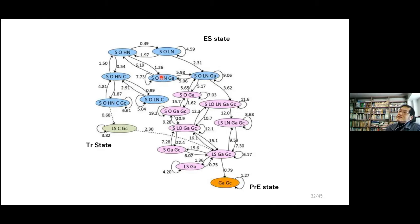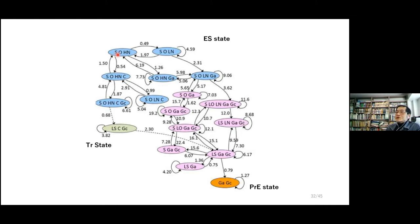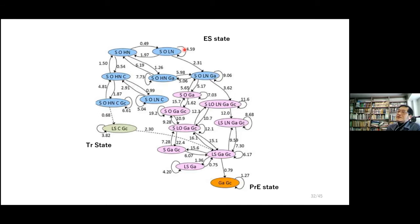There are multiple cell states. In this diagram, there is a state with high SOX2, OCT4, and high Nanog; a state with SOX2, OCT4, and low Nanog; and a state with low SOX2, CDX2, and GCNF expression as an intermediate state. The probability of transitions between these cell states can be measured by running many trajectories. We show this in a landscape picture by calculating transition rates between cell states.